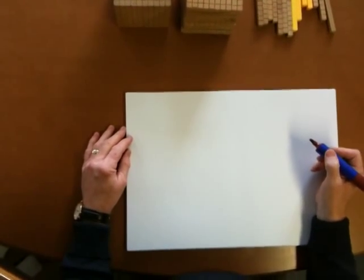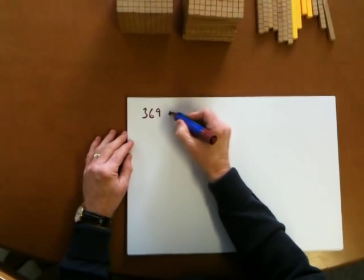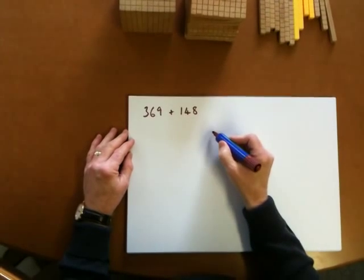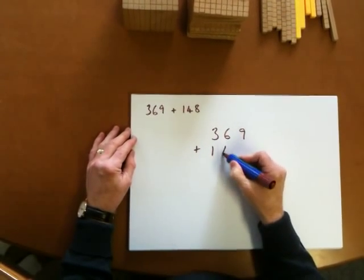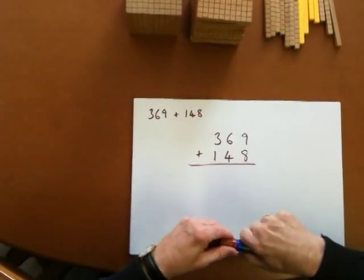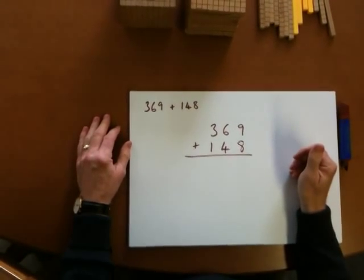We're looking at how we might add together 369 and 148. I'm now going to show you my favorite method. It is a method that you have to get used to, so children wouldn't be doing this unless they'd practiced with this equipment before.